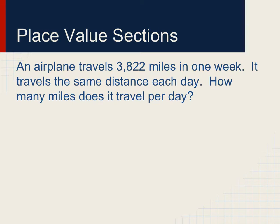The first method is the place value sections. The problem reads, an airplane travels 3,822 miles in one week. It travels the same distance each day. How many miles does it travel per day?